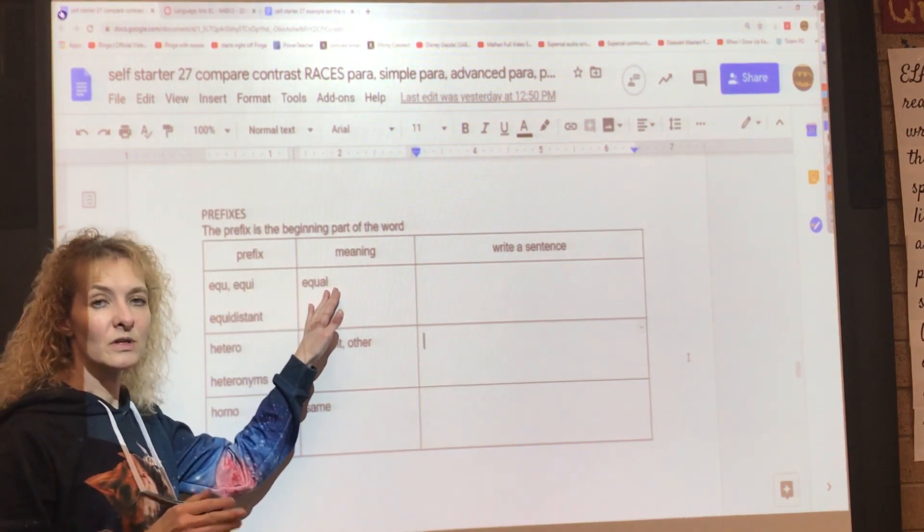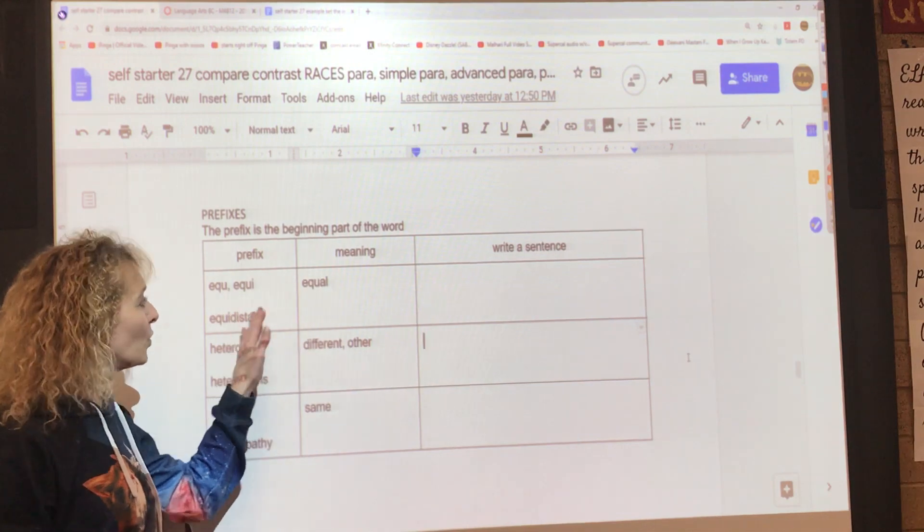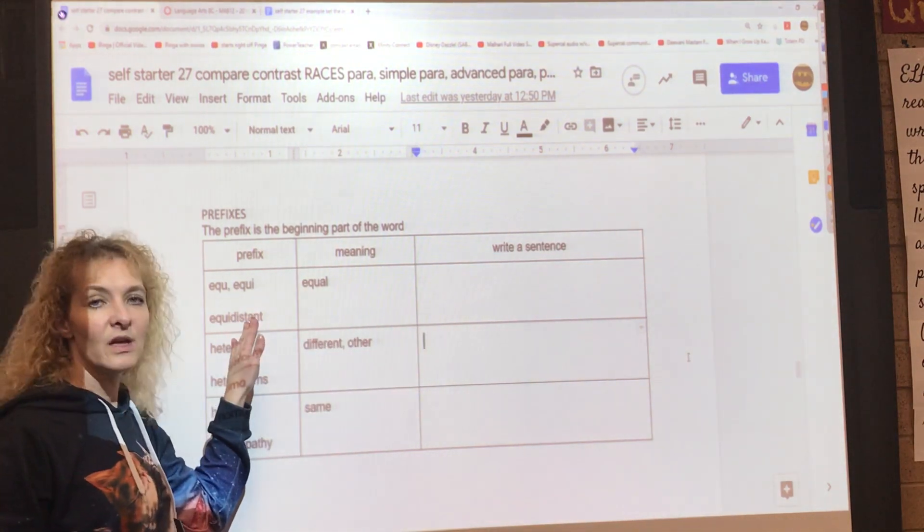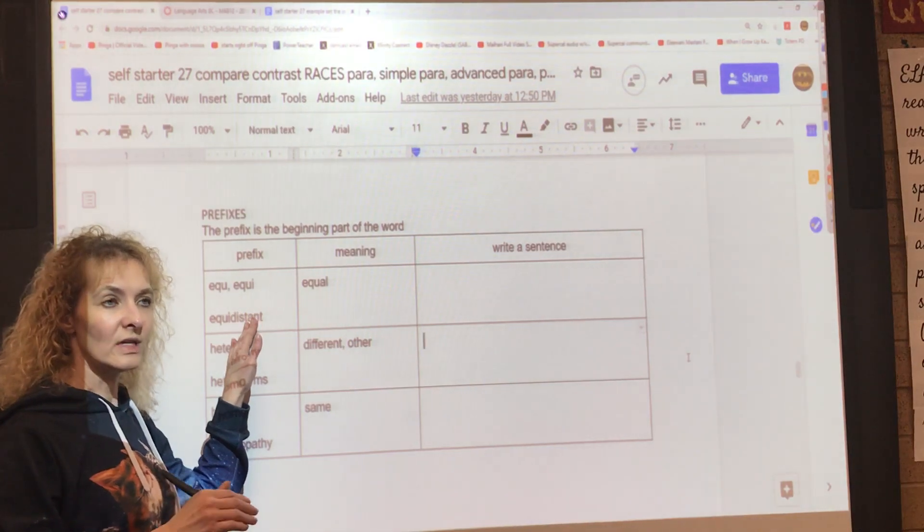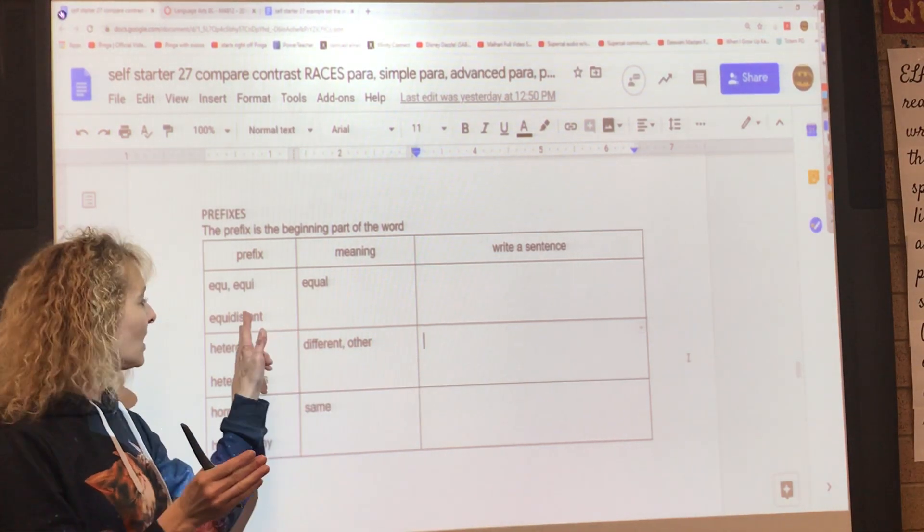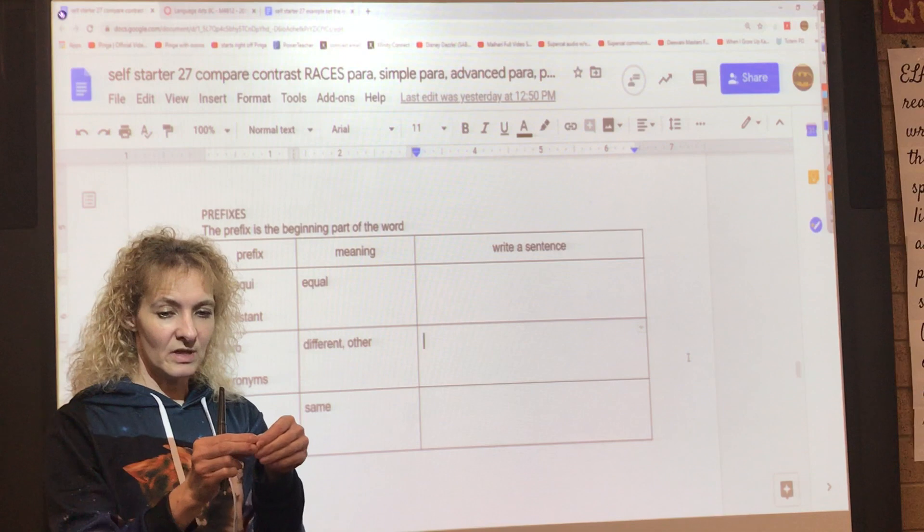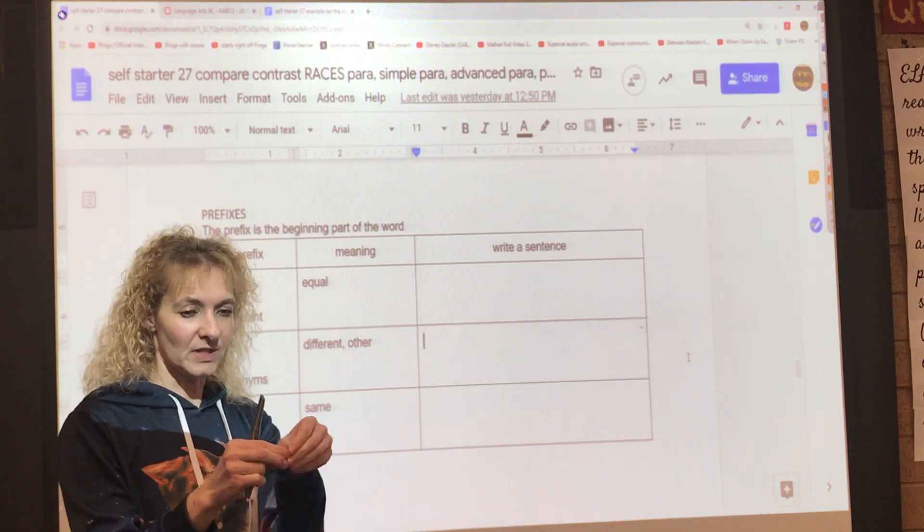Equi - equi means equal. Say equi. The word you have to put in the sentence is equidistant. So thinking of distance, equidistant means to be equal distance from the same point.